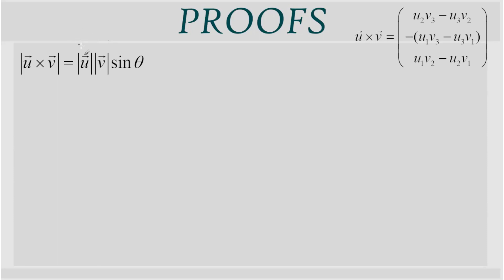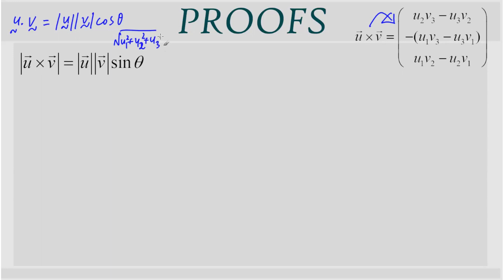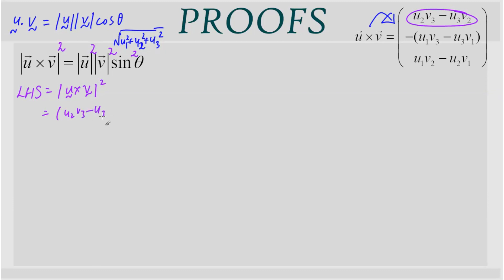For sine theta, we use the two known formulas: u·v = |u||v|cosθ and |u×v| = |u||v|sinθ. To avoid dealing with square roots, we square both sides of the second: |u×v|² = |u|²|v|²sin²θ. Starting from the left-hand side, |u×v|² is the sum of squares of its components: (u2v3−u3v2)² + (u1v3−u3v1)² + (u1v2−u2v1)².